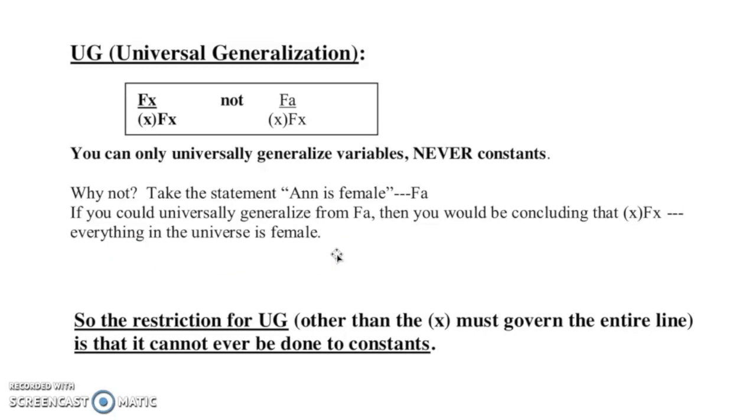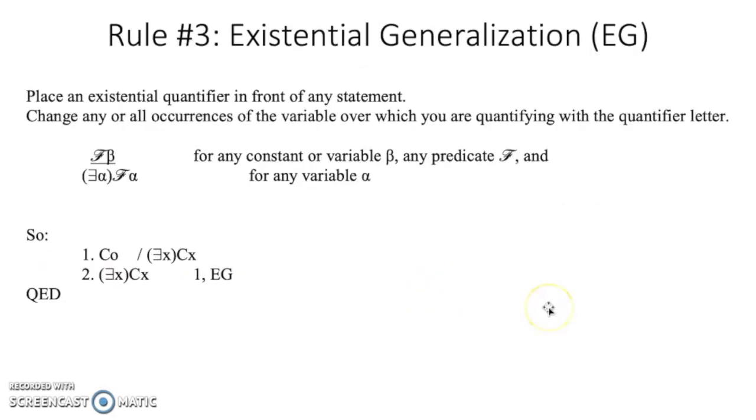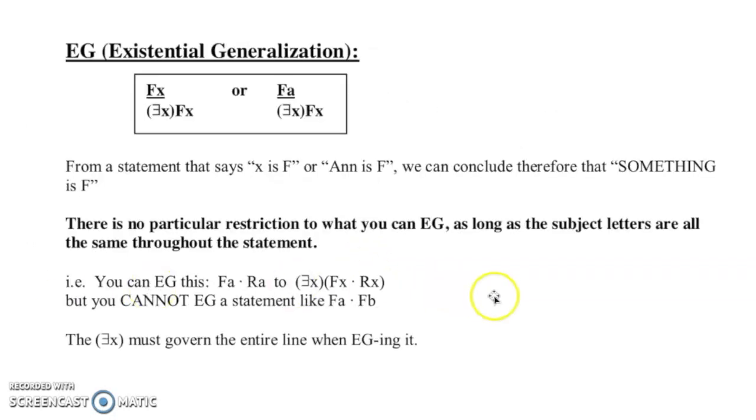Okay, so now we're getting into the existential. Place an existential quantifier in front of any statement. So change any or all occurrences of the variable over which you are quantifying your quantifier letter. We've got an example here. So from a statement that says X is F or An is F, we conclude therefore that something is F. So there's no particular restriction, just as long as the subject letters are all the same throughout the statement.